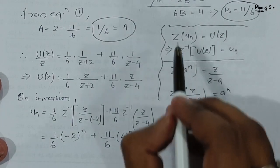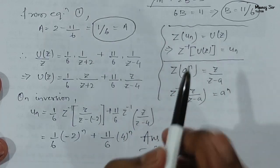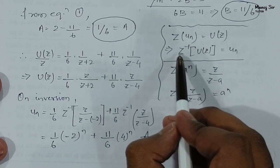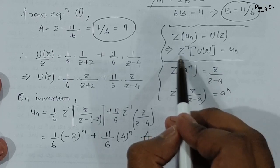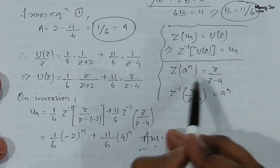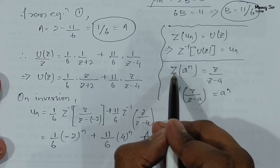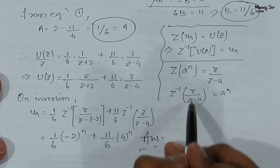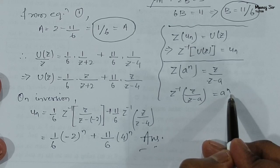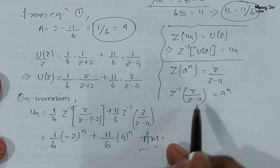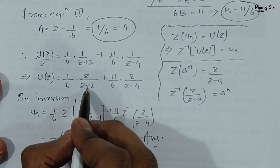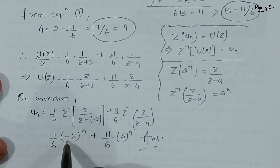To summarize: remember that the Z-transform of u[n] equals U(z), so on inversion, the inverse Z-transform of U(z) equals u[n]. Also remember that the Z-transform of aⁿ equals z/(z − a), so the inverse Z-transform of z/(z − a) equals aⁿ. Applying these, with z + 2 written as z − (−2), gives (−2)ⁿ for the first term, and 4ⁿ for the second. Thank you so much.